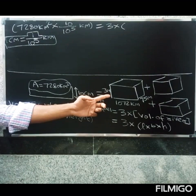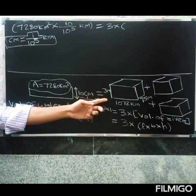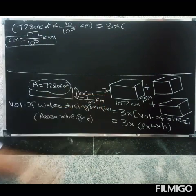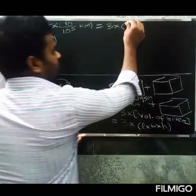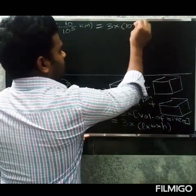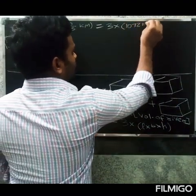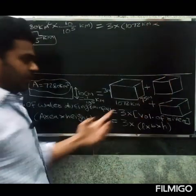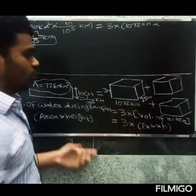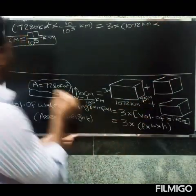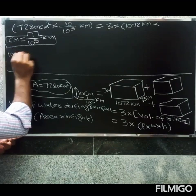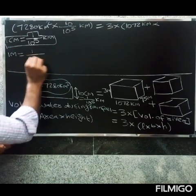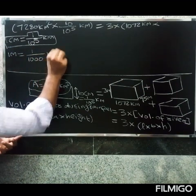So the right side: 3 into L into B into H. L equals 1072 kilometers. Next, breadth is 75 meters, height is 3 meters. For meter to kilometer conversion: 1 meter equals 1 divided by 1000 kilometers.